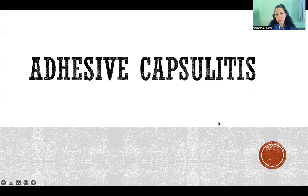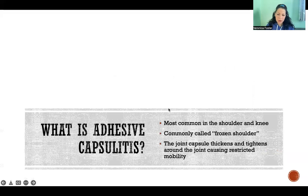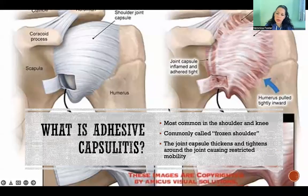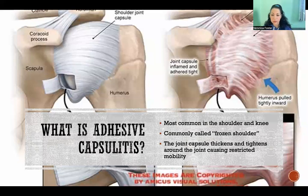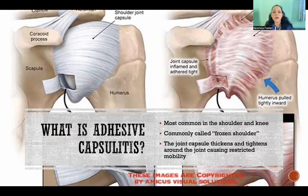Hello, in this video I'm going to tell you all about adhesive capsulitis. So what is adhesive capsulitis? It is most common in the shoulder and knee, and it's commonly referred to as frozen shoulder. But that's kind of a misnomer because it can occur in other joints, like the knee in particular, but also in the hip and elsewhere.